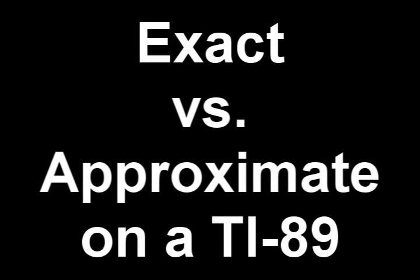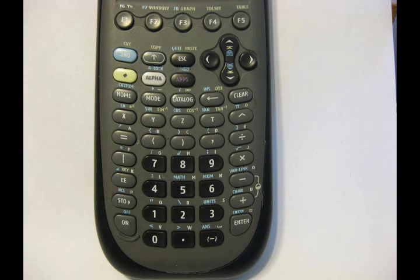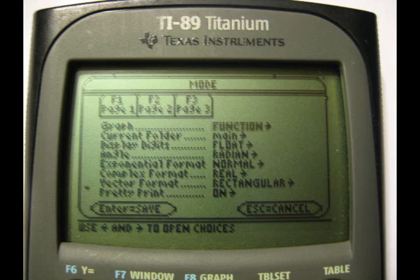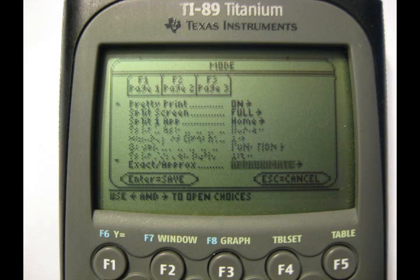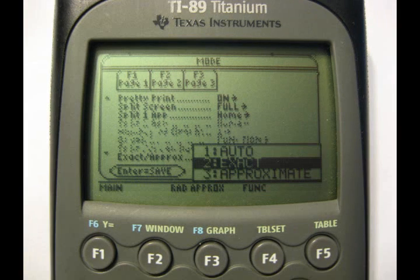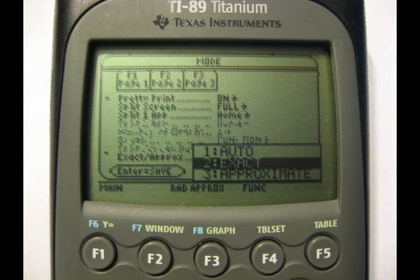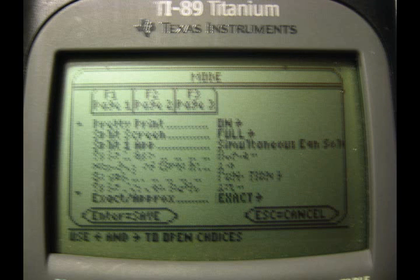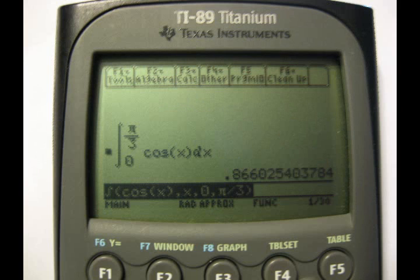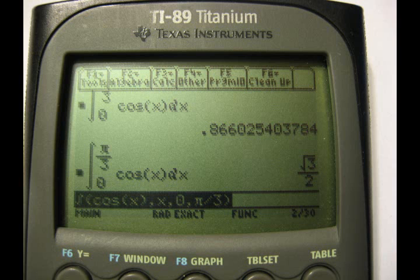If you find that none of the answers are in decimal form, then you can find the exact answer by pressing mode, then you scroll down until you get to exact slash approximate, and then you press the right arrow key, and select exact, which should be number 2, and then press enter, and then press enter again, and then make sure your previous problem is highlighted, and press enter, and you will get the exact fraction version of your answer.